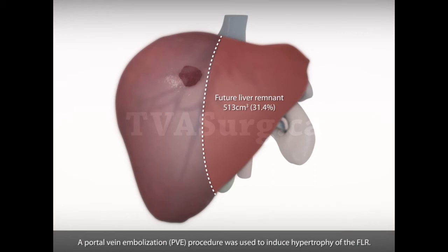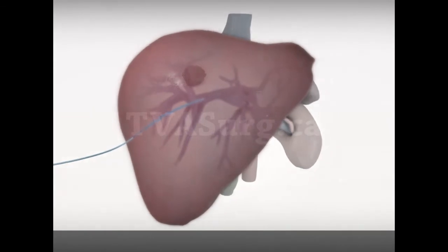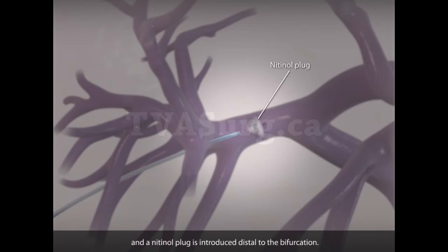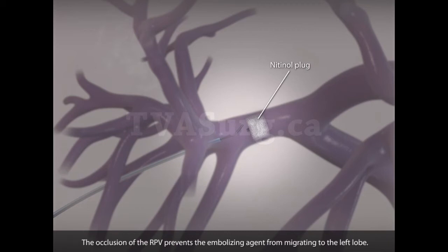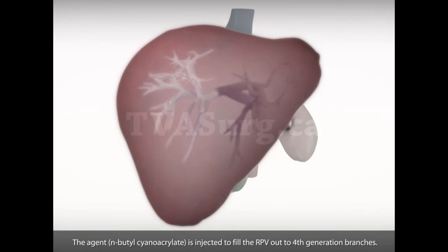A portal vein embolization procedure was used to induce hypertrophy of the FLR. A catheter is inserted into the ipsilateral right portal vein using a transhepatic approach. The catheter tip is directed at the main RPV and a nitinol plug is introduced distal to the bifurcation. The occlusion of the RPV prevents the embolizing agent from migrating to the left lobe. The agent N-butyl cyanoacrylate is injected to fill the RPV out to 4th generation branches.